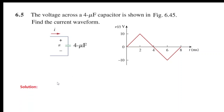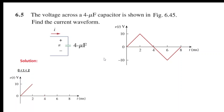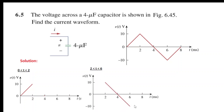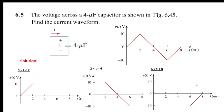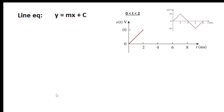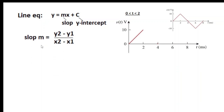First of all, I'll break this into three parts: the first part from 0 to 2ms, the second part from 2 to 6 milliseconds, and the third part from 6 to 8 milliseconds. For the first part, we know the line equation is Y = MX + C, where M is the slope and C is called the Y-intercept.